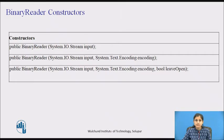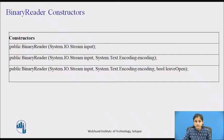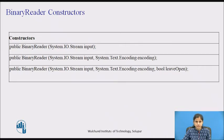We'll begin with the BinaryReader class. BinaryReader reads primitive data types as binary values in a specific encoding. The BinaryReader class provides methods that simplify reading primitive data types from a stream. For example, we can use the ReadBoolean method to read the next byte as a boolean value and advance the current position in the stream by one byte. If we do not specify an encoding type, UTF-8 is used.